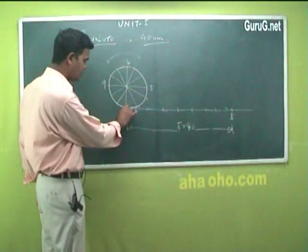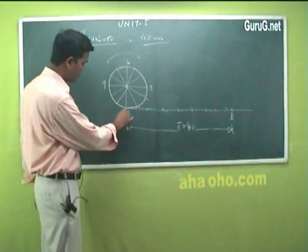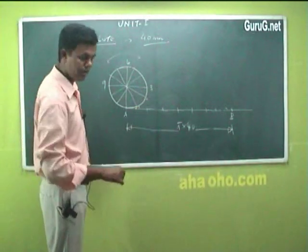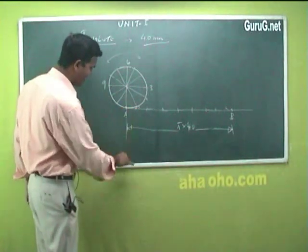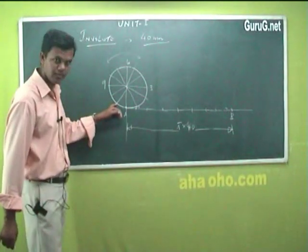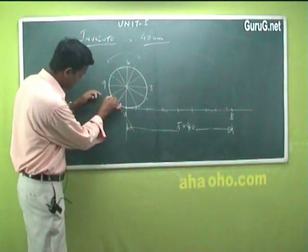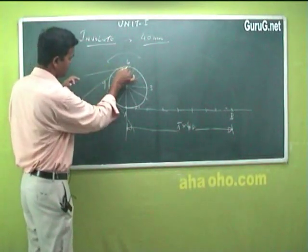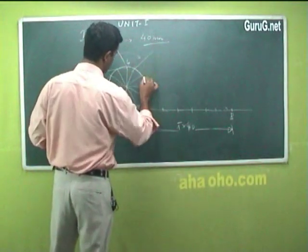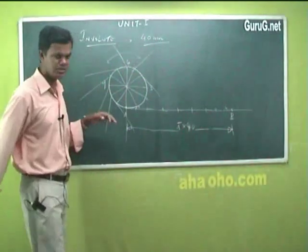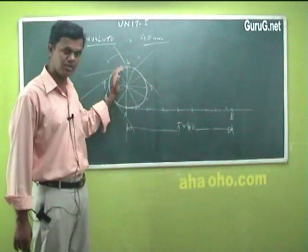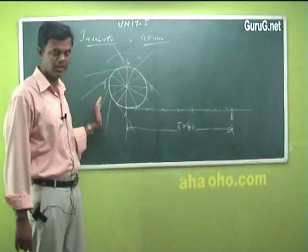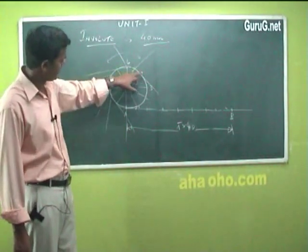Starting from point A, you have points 1, 2, 3, etc. on the circle. From every point on the circle you draw tangent lines, because this is a curve and at every point you can draw a tangent line. When you have a scale, you fix it at a particular point and draw a perfect tangent line. So from every equal division point, you take a tangent line.